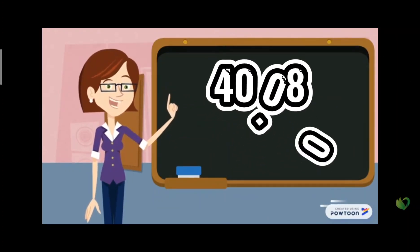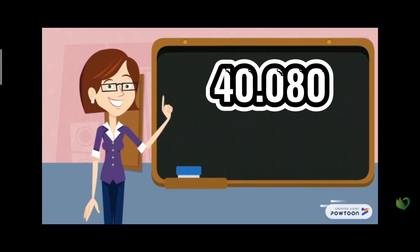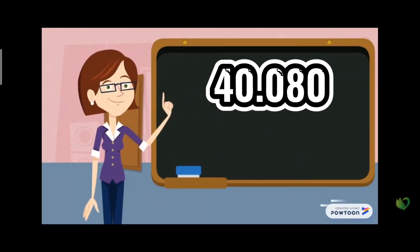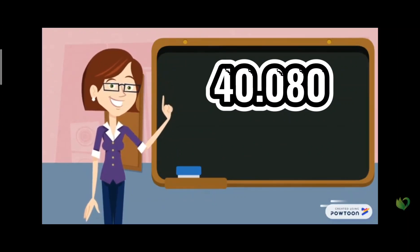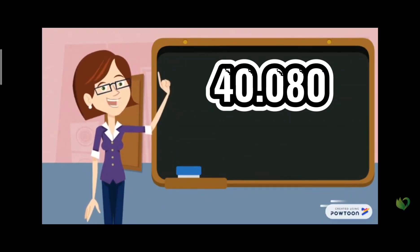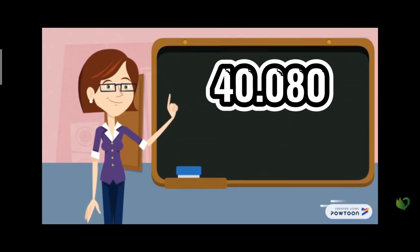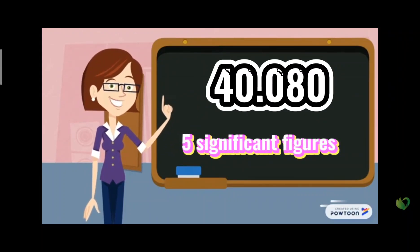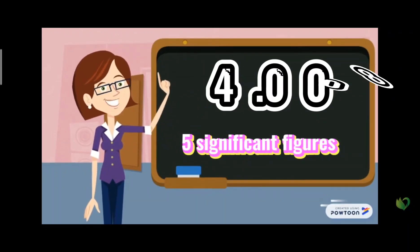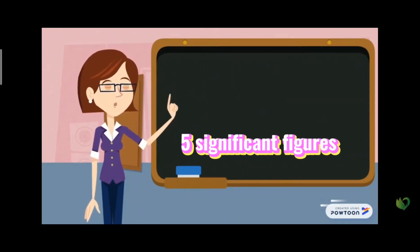For the next one, there is a decimal point, so the trailing zero is counted, and all of the zeros in between 4 and 8 are also counted. So in this example we have five significant figures.